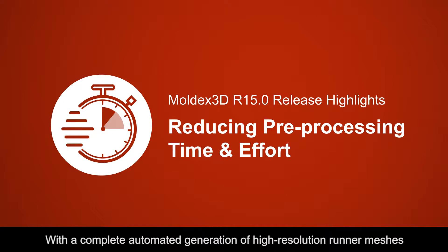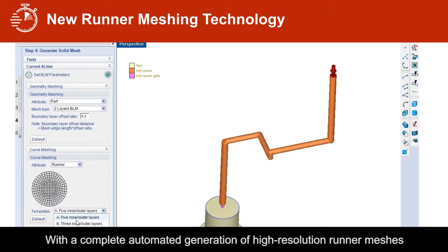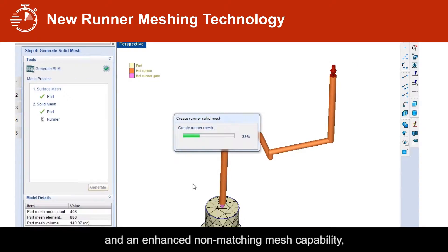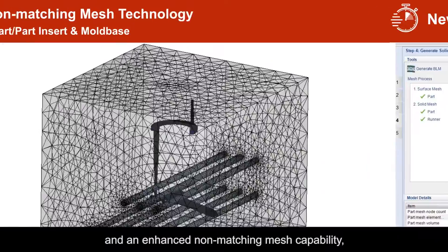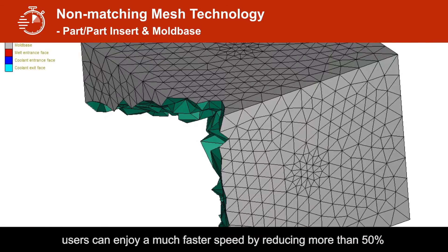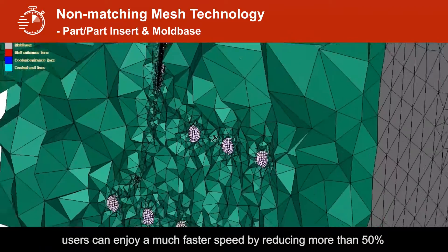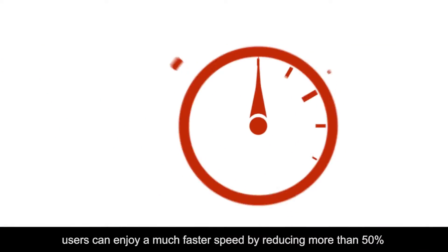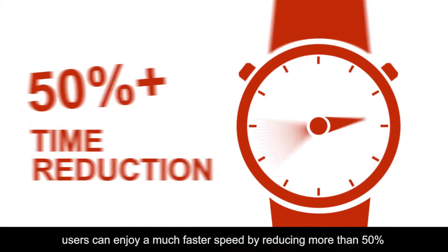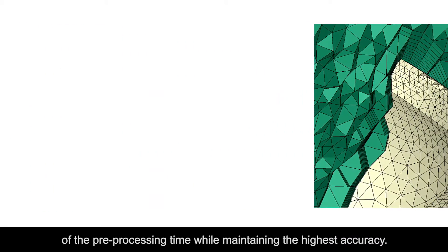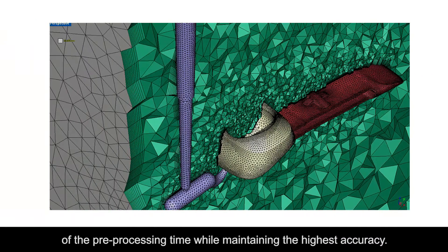With a complete automated generation of high-resolution runner meshes and an enhanced non-matching mesh capability, users can enjoy much faster speed by reducing more than 50% of the pre-processing time while maintaining the highest accuracy.